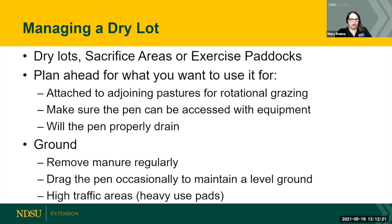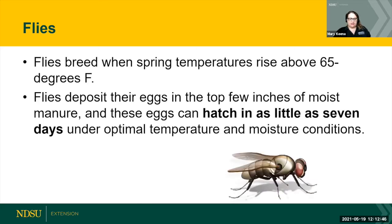Managing the soil in your dry lot: remove manure regularly, drag the panel occasionally to maintain a level ground surface, and keep in mind high traffic areas — do we need to put some heavy use pads in? Now, getting more into the parasites. Flies breed when spring temperatures rise above 65°F — and we are there. Flies deposit their eggs in the top few inches of moist manure, and their eggs hatch in as little as seven days. We're going to start seeing some major fly hatches coming up, especially if it stays warm and we get a little moisture as predicted. How do we manage that? We remove the manure.